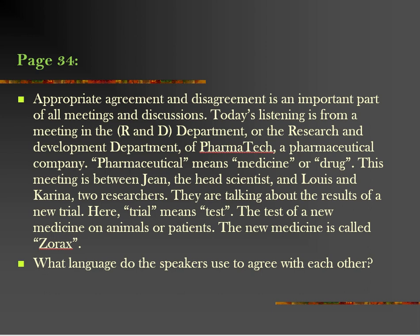Appropriate agreement and disagreement — الاتفاق أو الاختلاف بالشكل اللائق — is an important part of all meetings and discussions. هو جزء أساسي في كل الاجتماعات والمناقشات. Today's listening is from a meeting in the R&D department — قسم الأبحاث والتطوير — of Pharmatech — شركة اسمها Pharmatech — a pharmaceutical company. Pharmaceutical معناها لها علاقة بالأدوية والصيدلة والعقاقير.